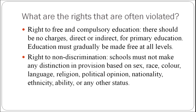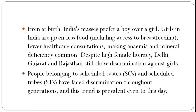Right to non-discrimination: schools must not make any distinction based on sex, race, color, language, religion, political opinion, nationality, ethnicity, ability or any other status. In India, even at birth, masses prefer a boy over a girl. Girls are given less food including access to breastfeeding, fewer health care consultations making anemia and mineral deficiency common. Despite high female literacy, Delhi, Gujarat and Rajasthan still show discrimination against girls. People belonging to SC and ST categories have also faced discrimination throughout generations, and this strain is prevalent even today.